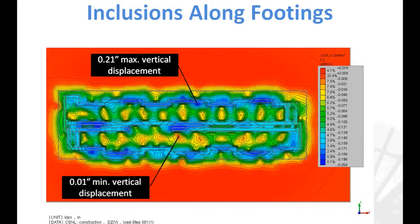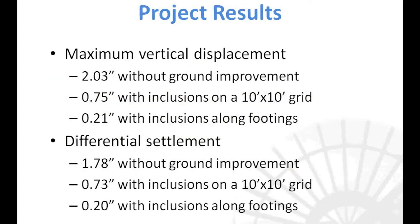By using approximately the same number of inclusions as in the 10-foot by 10-foot grid but placing them along the footings and in between the walls — with just a few in between walls to address the floating slab — the maximum vertical displacements and differential displacement are reduced down to about 0.21 inches. The finite element analysis showed that the ground improvement system decreases maximum vertical displacement as well as differential displacement, and that placing the inclusions along the footings is the best approach.